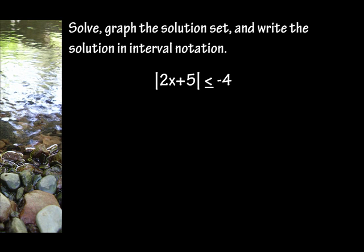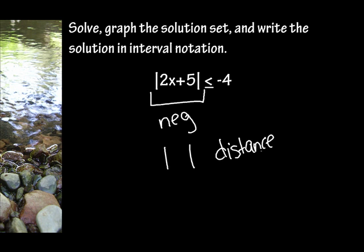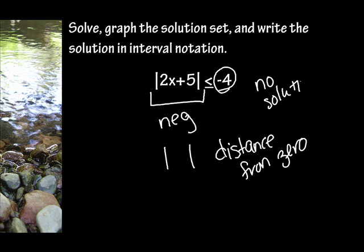Solve, graph the solution set, and write the solution in interval notation. I have the absolute value of 2x plus 5 is less than or equal to negative 4. Now this is a trick question. Can an absolute value ever become negative? No — because absolute value means the distance from 0, so this can never equal negative 4. There's no solution. Some instructors like to put this on there just to see if they can trick you — but don't let them.